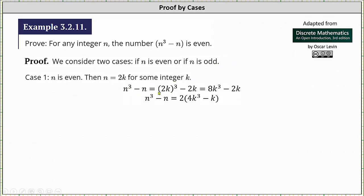n³ - n is equal to the cube of 2k minus 2k, which is equal to 8k³ - 2k. Notice 8k³ - 2k has a common factor of 2. We can write n³ - n as 2 times the quantity 4k³ - k. And since 4k³ - k is an integer, n³ - n is equal to 2 times an integer, which indicates n³ - n is even.